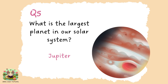Question five: the largest planet in our solar system is Jupiter. It's so big that all of the other planets could fit inside it. It has 95 moons, and it's actually the oldest planet in our solar system.